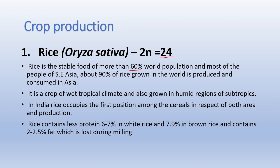More than 90% of the world's rice is consumed and produced in Asia. It is a crop of wet tropical climate and also grown in humid regions of subtropics. India occupies first position among cereals in respect of both area and production. Generally, cereals have protein percentage in the range of 10–11%, while pulses have 20–25%. But rice has lower protein — white rice contains 6–7% and brown rice 7.9%. Rice also consists of 2–2.5% fat, which is lost during milling.